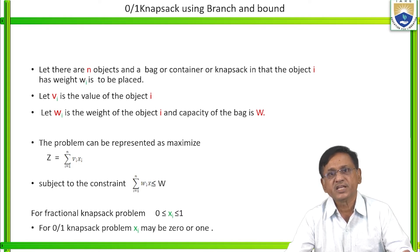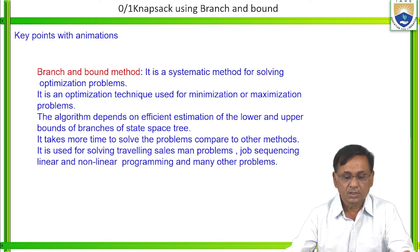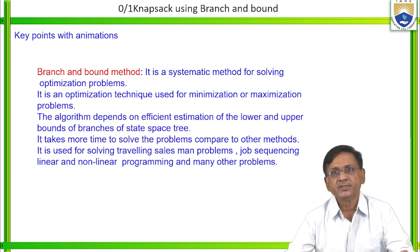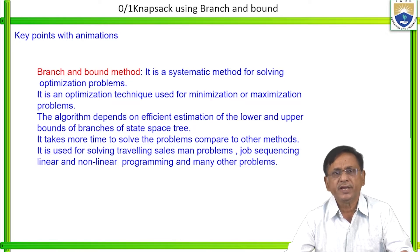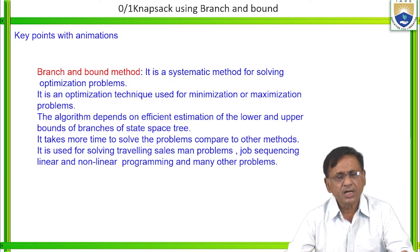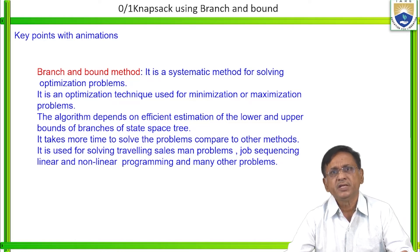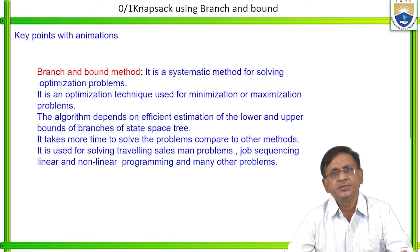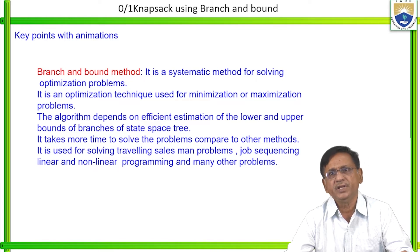Branch and Bound method is a systematic method for solving optimization problems — it is used for minimization or maximization. The algorithm depends on the efficient estimation of lower and upper bounds of the branches of the state space tree. It takes more time compared to other methods. It is used for solving the travelling salesman problem, job sequencing problem, linear programming problem, non-linear programming problem, and many other problems.